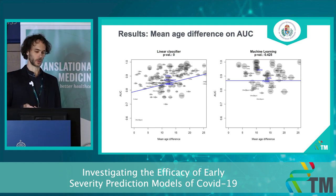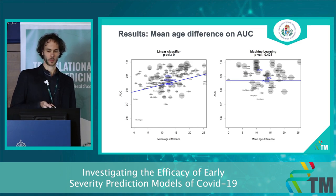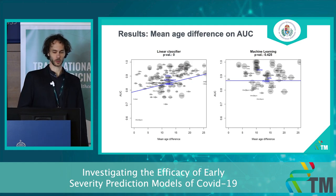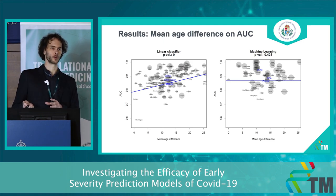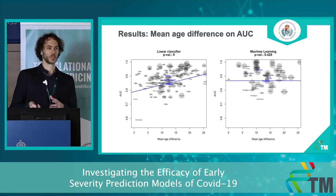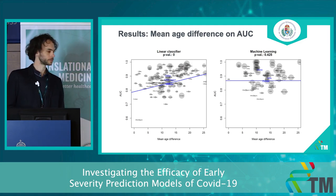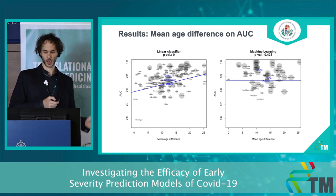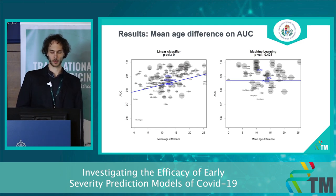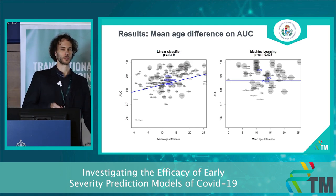There's an important other attribute of these models. For linear classifiers — the simpler models — it really matters whether there is a small or large difference between the severe and non-severe groups. It's obviously much easier to identify severe patients if they are a lot older than the non-severe ones. But this effect is not present for machine learning models. So at least in terms of mean age difference between groups, we see the same performance throughout — machine learning models seem to be much more robust to different patient populations.